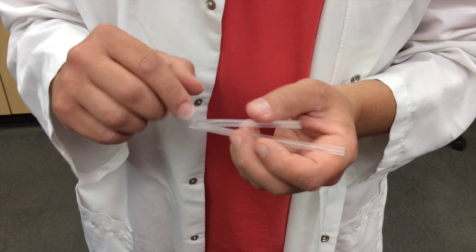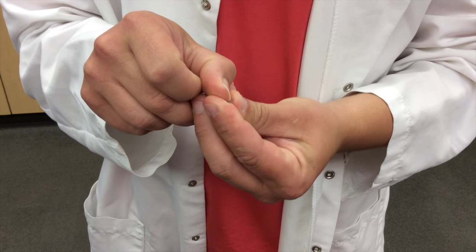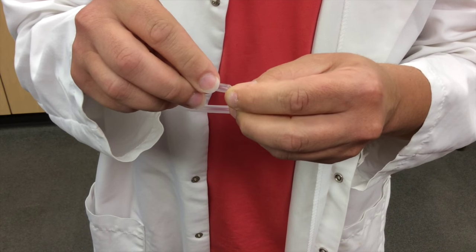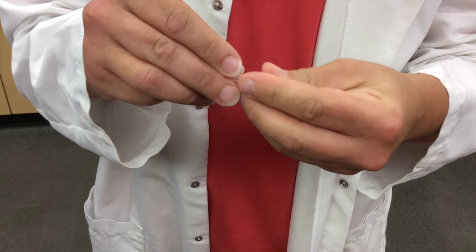Now that we have our folded straw, the next step is to pinch and fold one end of the straw, so that the pinched end can be pushed into the other end of the straw, making a triangle.